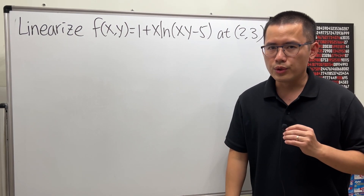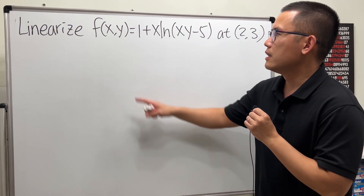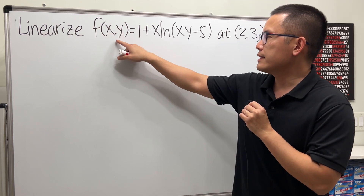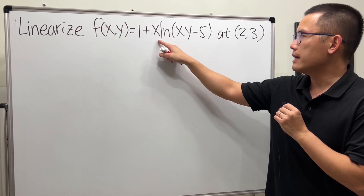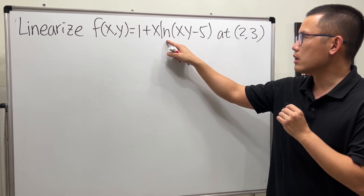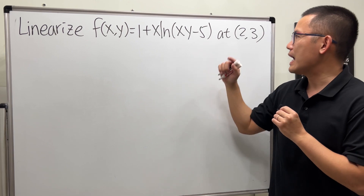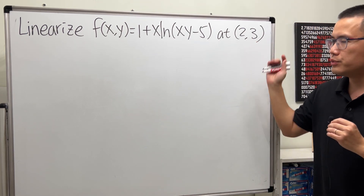Calculus 3 tutorial. We will be linearizing the multivariable function f(x,y) = 1 + x · ln(xy − 5) at the point (2, 3).